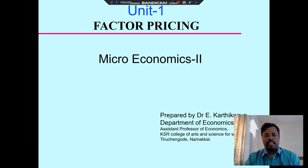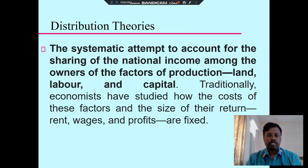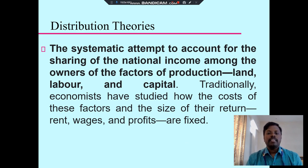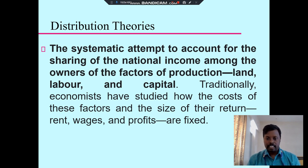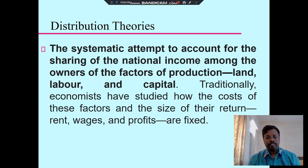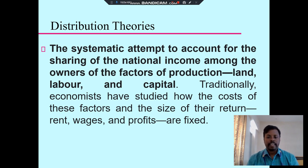In factor pricing there are different pricing systems. We discuss about the theories. The first one is distribution theory — the systematic attempt to account for the sharing of the national income among the owners of the factors of production. There are four factors of production: land, labor, capital, and organization.